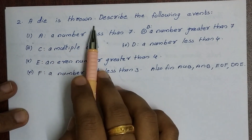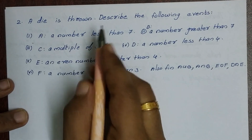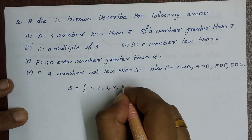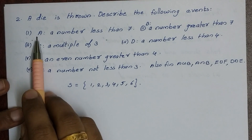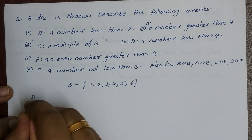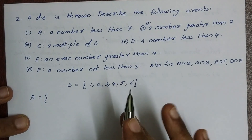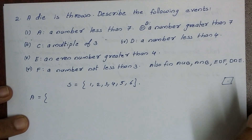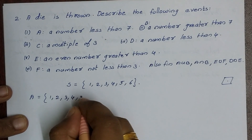Second question: a die is thrown. Describe the following events. The sample space is {1, 2, 3, 4, 5, 6}. Event A is a number less than 7, so A = {1, 2, 3, 4, 5, 6}.